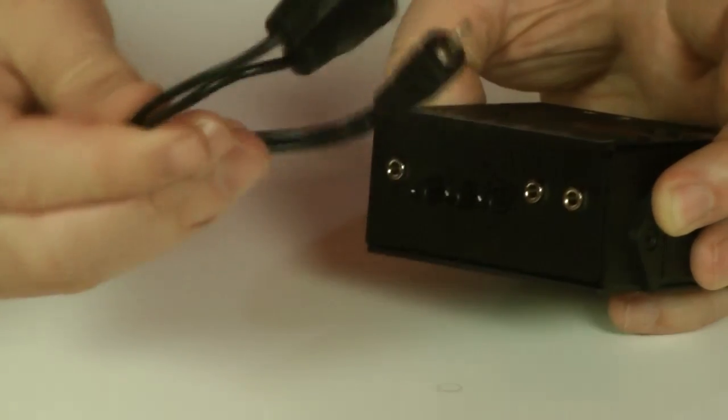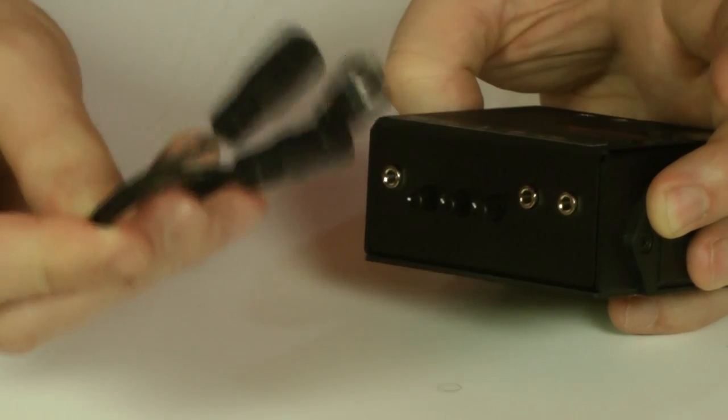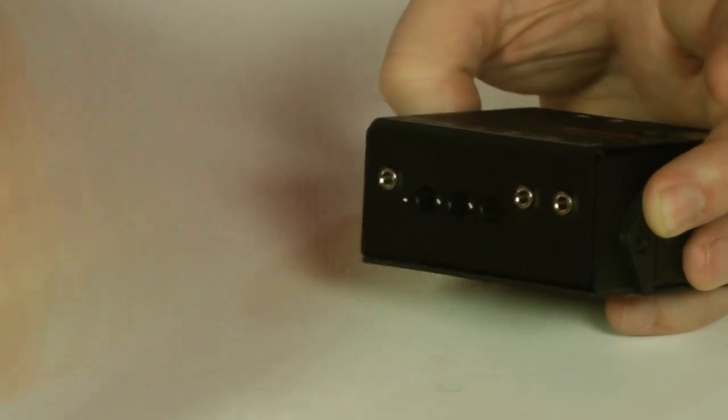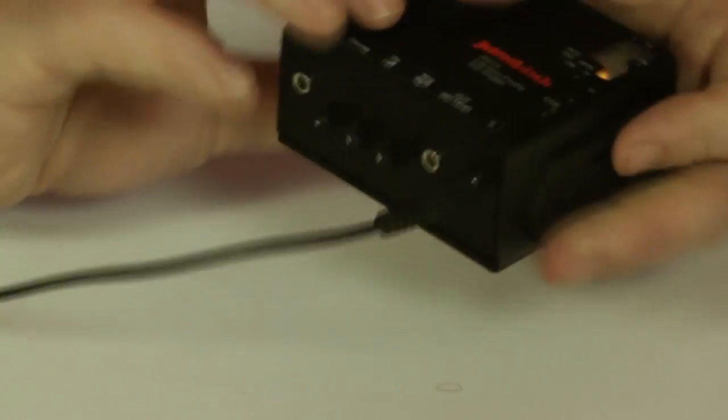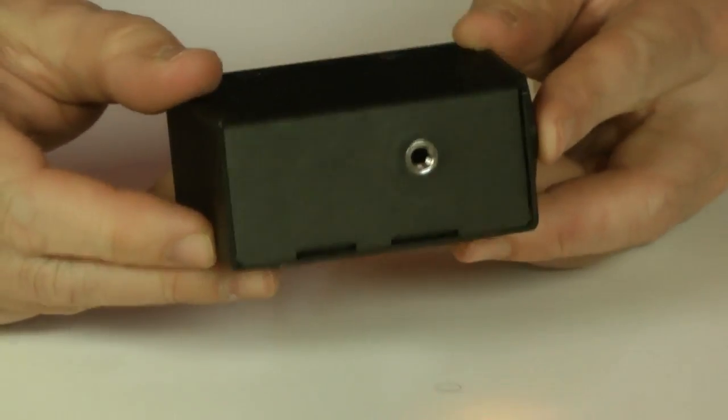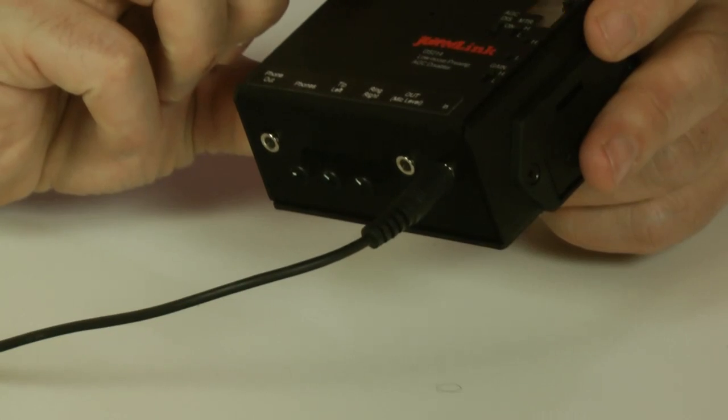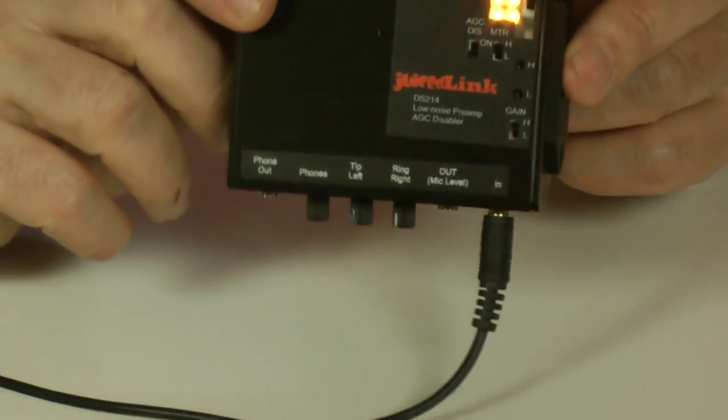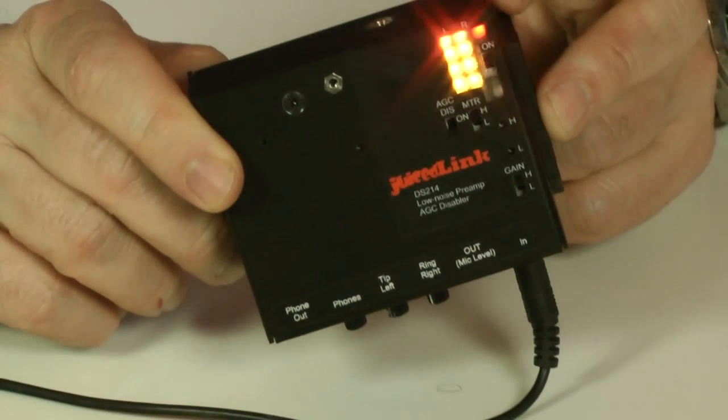So, splitters are quite cheap, that's probably around about five or six pounds, something like that, they're very cheap anyway, and so you can have two different channels recorded on it as well. So again, that's the Juicelink DS214 box, which is very useful for the purposes of sorting out the sound on your camera.